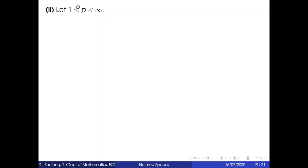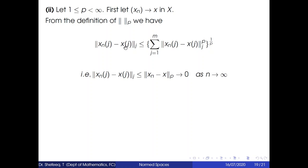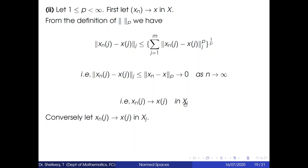For the second part of C, let 1 ≤ p < ∞. First assume the sequence x_n converges to x in X. From the definition of ‖·‖_p, we have ‖x_n(j) − x(j)‖_j ≤ (Σ_{j=1}^{M} ‖x_n(j) − x(j)‖_j^p)^{1/p} = ‖x_n − x‖_p. Since x_n → x in X, ‖x_n − x‖_p → 0 as n → ∞. Therefore x_n(j) → x(j) in X_j for every j.